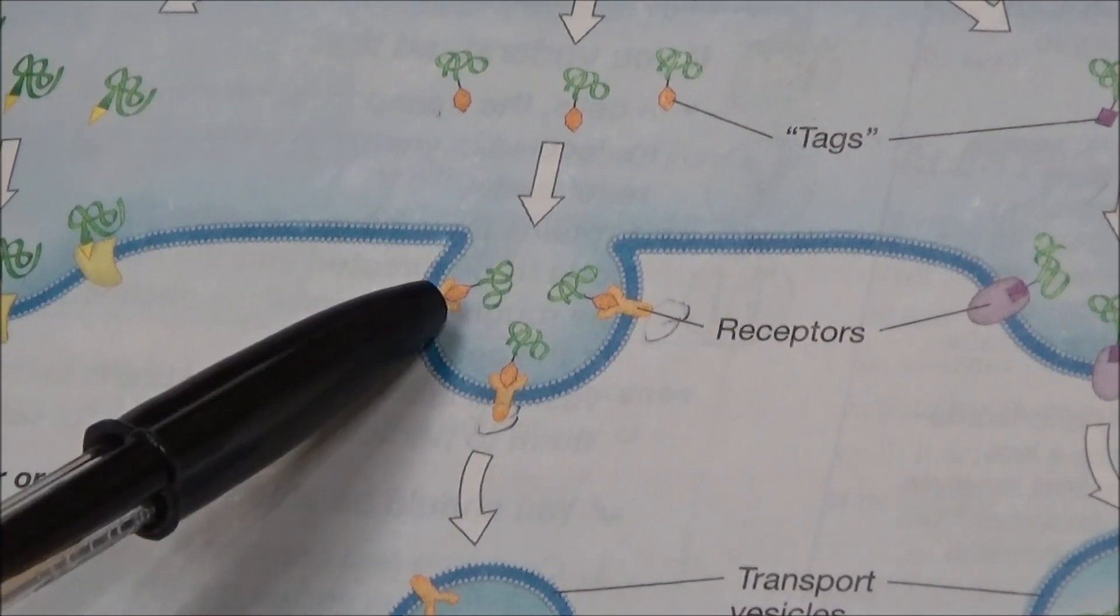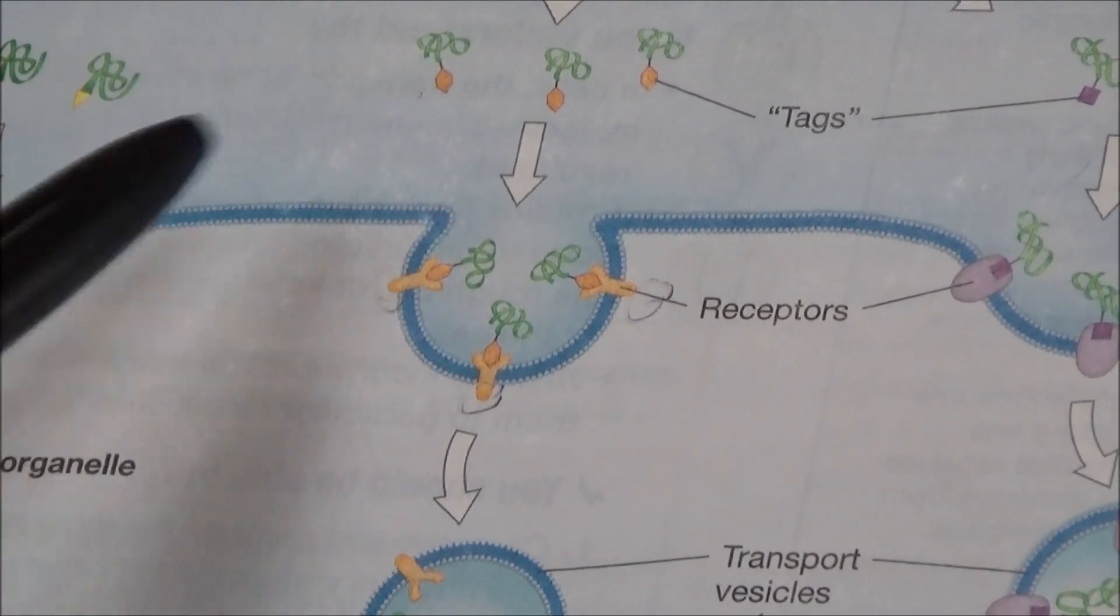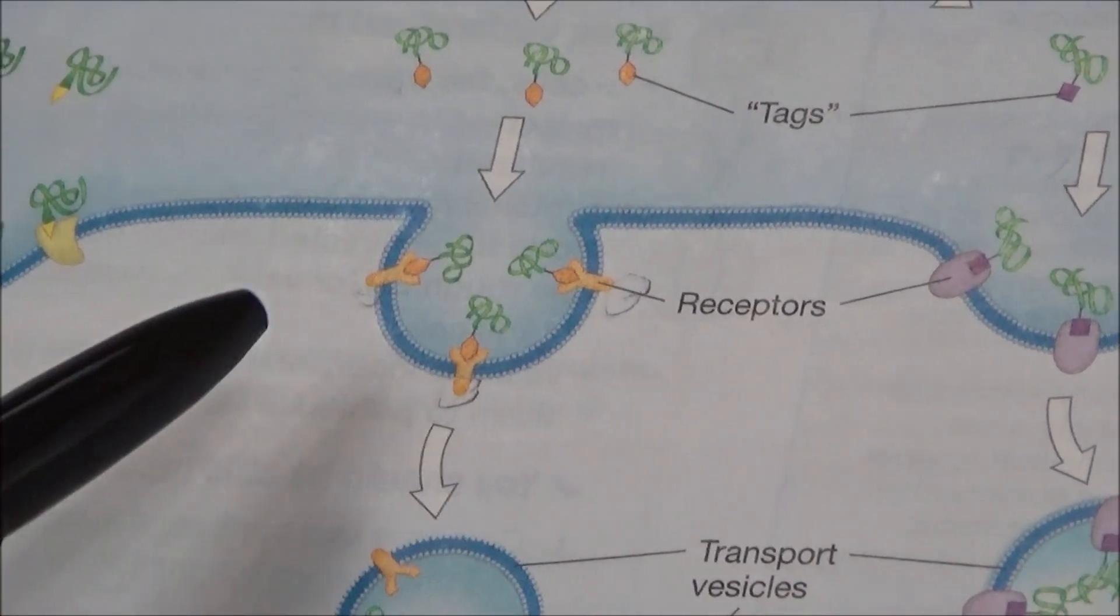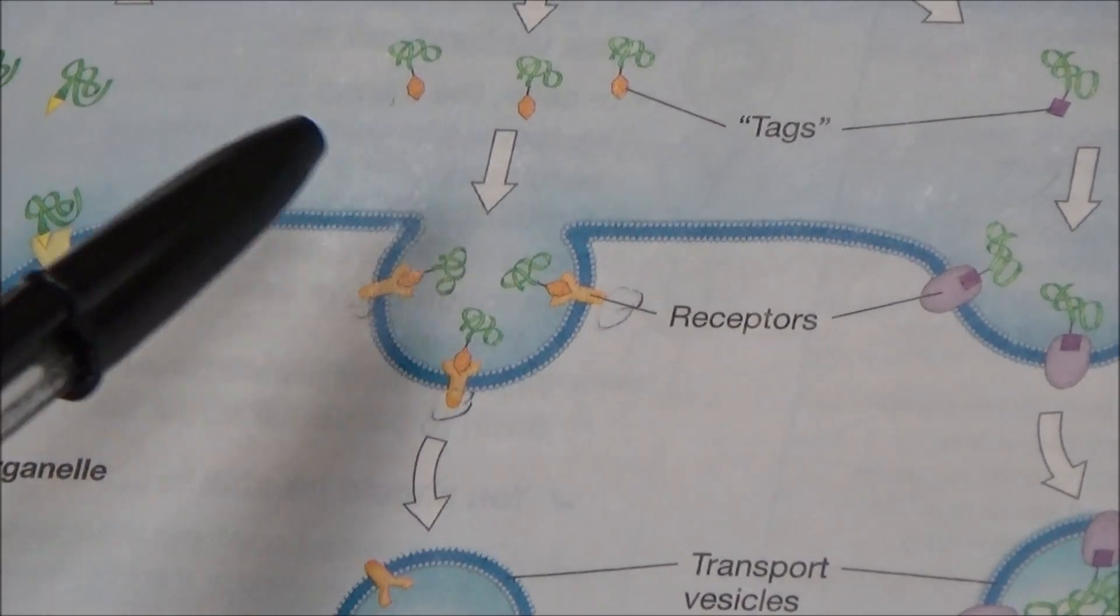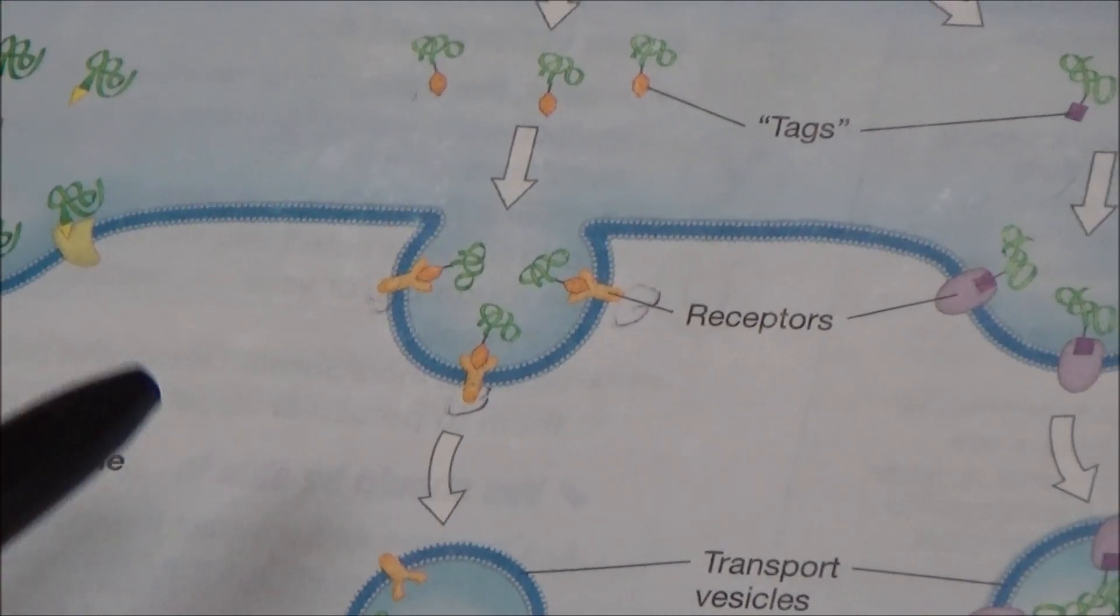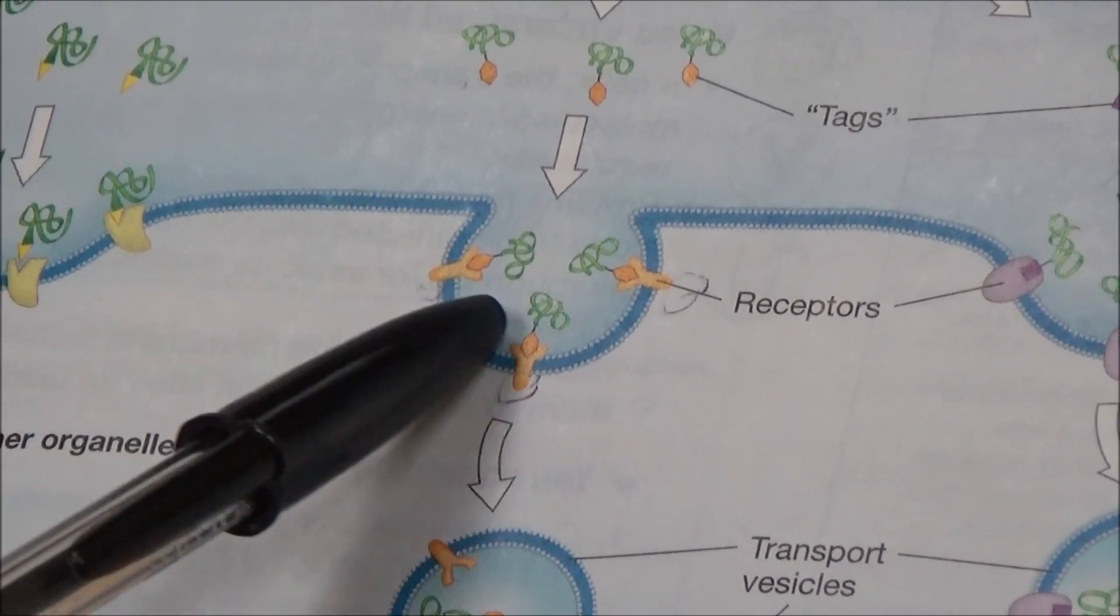It attaches to this, and that tells the Golgi body to bud off. In this case, it's called receptor-mediated exocytosis because it's being exported outside of the cell. It bubbles off and you can see it travels here.